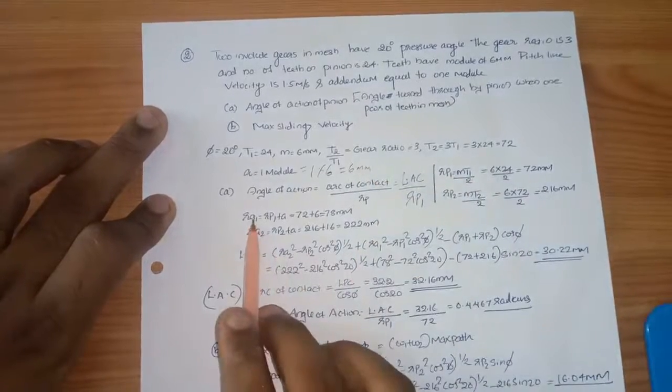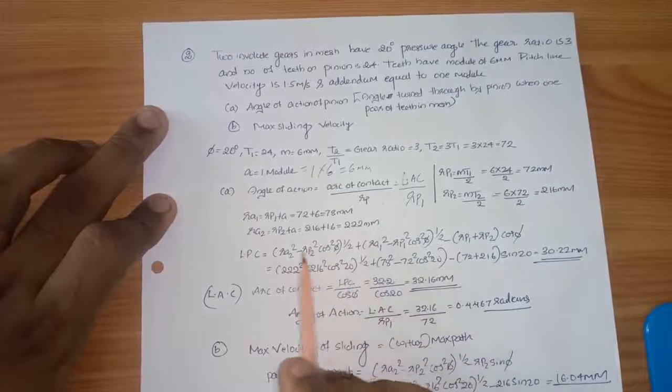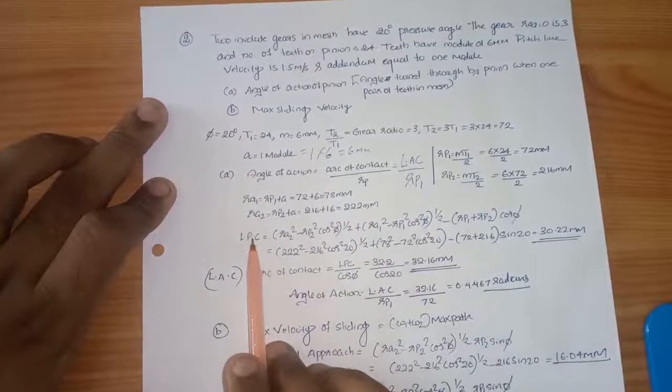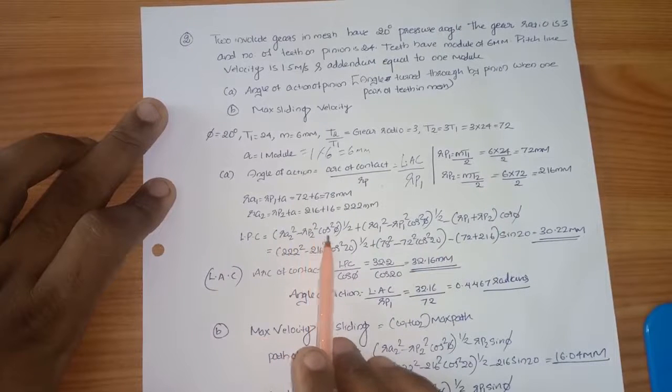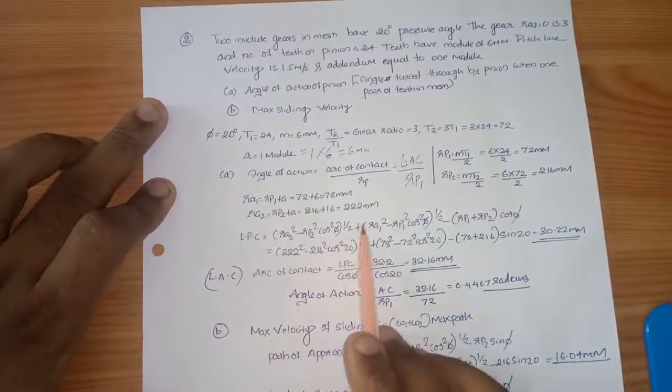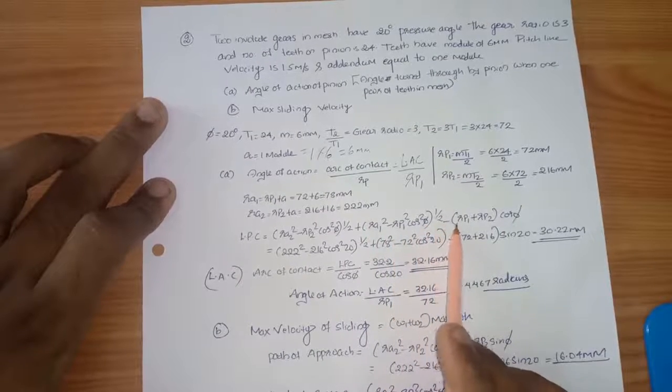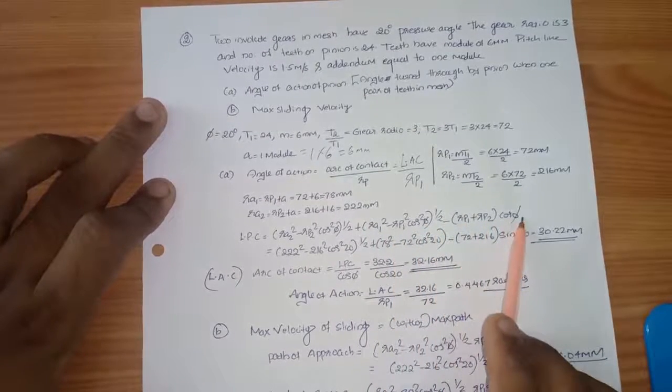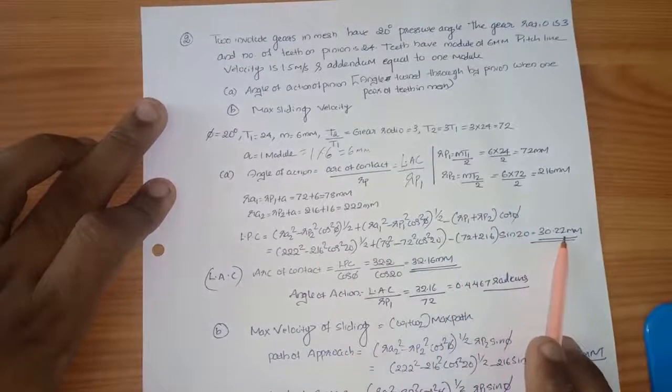This is length of path of contact equation. ri2 square minus rp2 square cos square phi, all raised to 1 by 2, plus ri1 square minus rp1 square cos square phi, all raised to 1 by 2, minus rp1 plus rp2 cos phi. Direct substitute, 30.22 mm LPC.